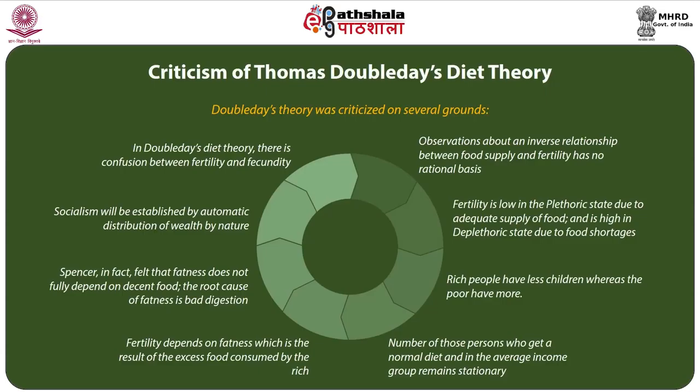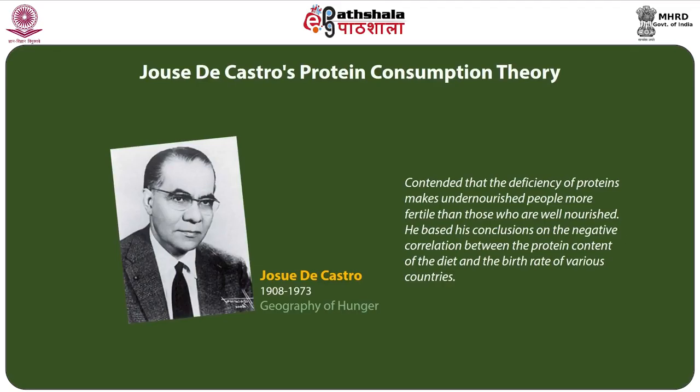Today the rich are more conscious about their health and make every effort to keep themselves and their families in good health through visits to fitness facilities, medical treatments, etc. Doubleday felt that socialism would be established by automatic distribution of wealth by nature, an argument with no scientific basis. There is also a confusion in Doubleday's theory between fertility and fecundity. Thomson and Lewis stated there is no scientific basis for the belief that the proportion of protein in the diet or the relative abundance of calorie intake has any noticeable effect upon fecundity.